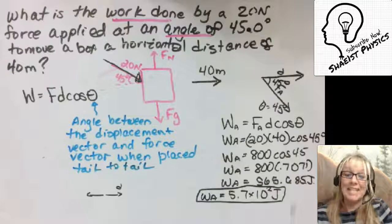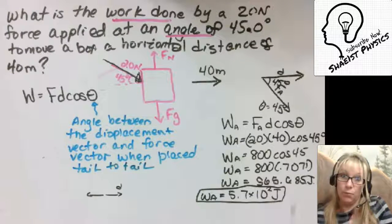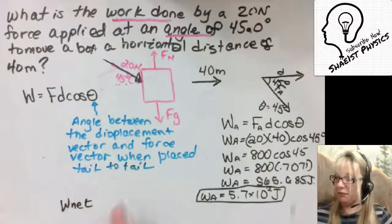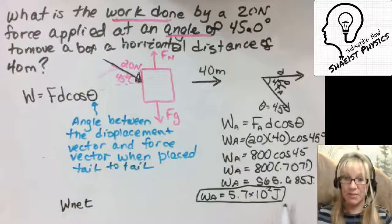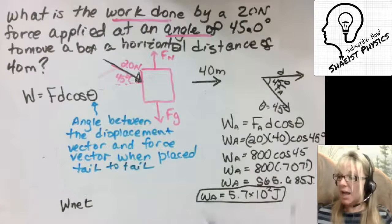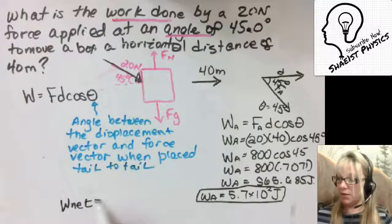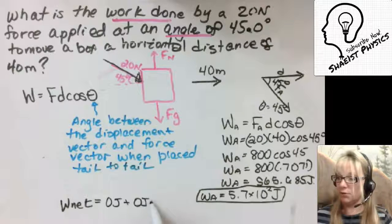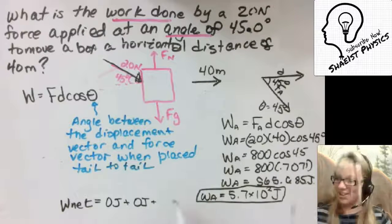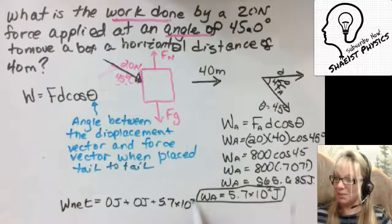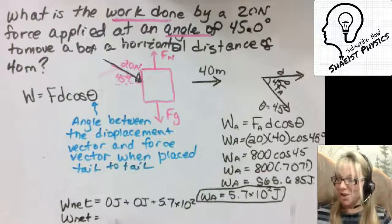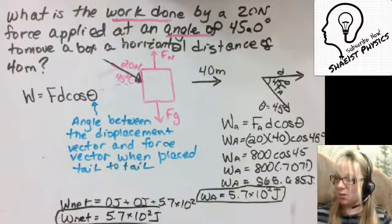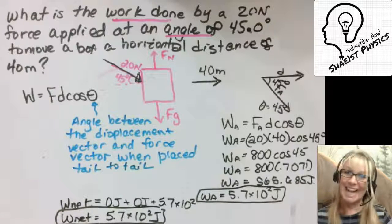Now again, this problem didn't say whether we were looking for the work done by that force or the network, well the work done by the applied force is going to be 5.7 times 10 squared joules. But if we were going to total the network, well that's going to be 0 joules from the gravitational force, 0 joules from the normal force that we calculated before, 5.7 times 10 squared joules from the applied force. So really it doesn't matter what the problem was specifically asking for, because both the network and the work done by that one force are exactly the same.